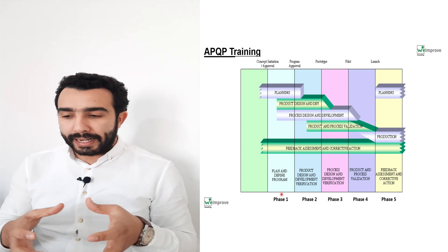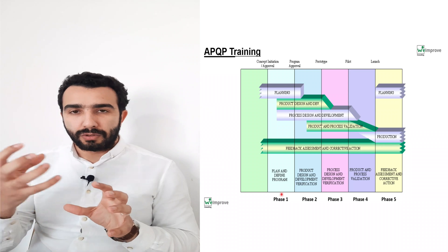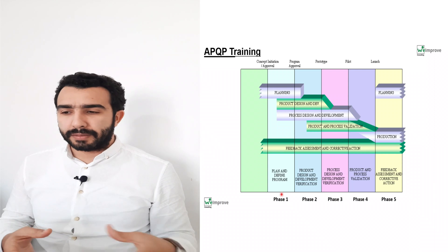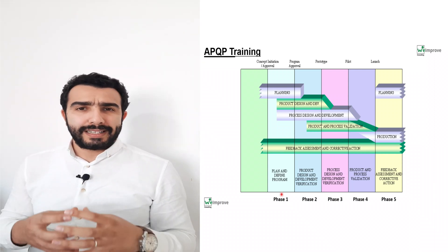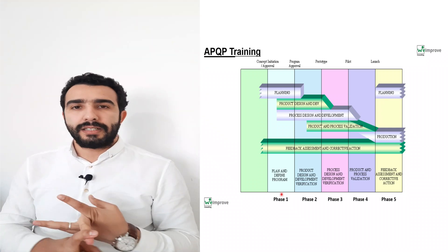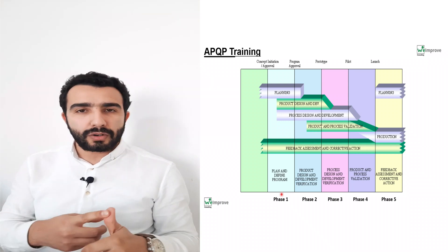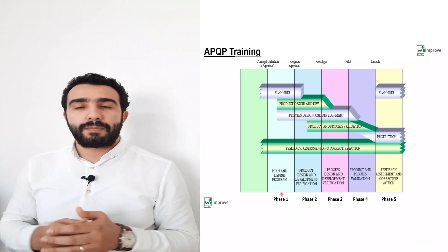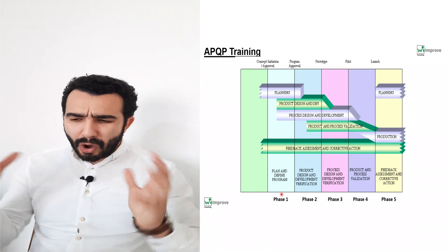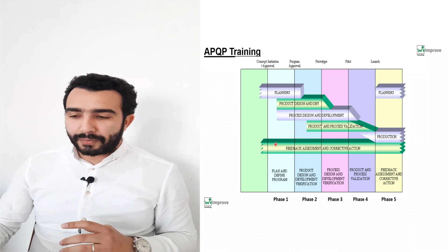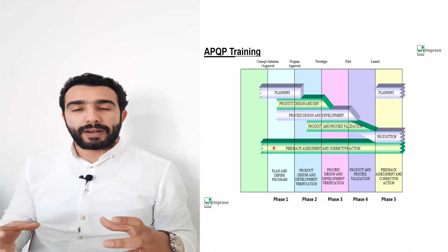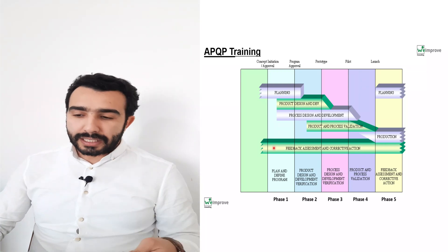Phase 1 is Planning and Definition of the Program. In this phase, you define and plan the project together with your customer — covering requirements, customer-specific requirements, risk assessments, product design, cost, and the planning schedule for when each phase should be finished. Everything related to the project should be defined in Phase 1.